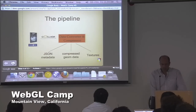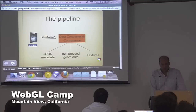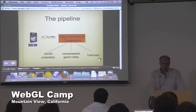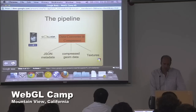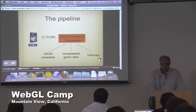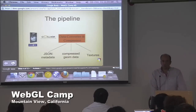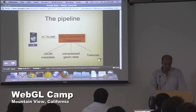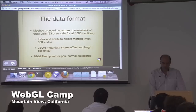In order to do that we built a custom pipeline. We got the models as a Maya file from Zygote, used the OpenCollada exporter to export to a Collada file, and from there ran our own special pipeline that converts the data into the files we need. We extract a JSON file with metadata containing all the entity names, separately export the compressed geometry data, and then textures as a separate set of files.